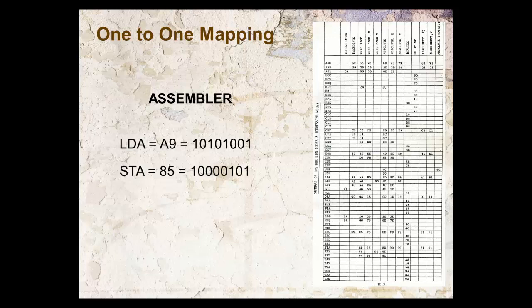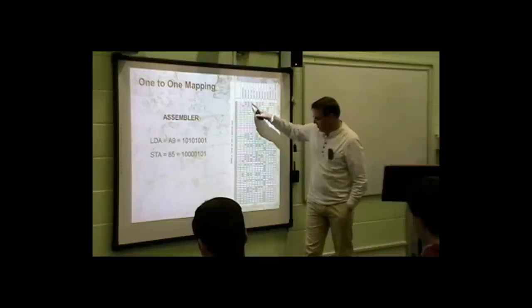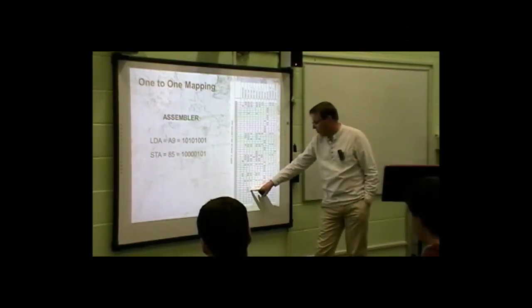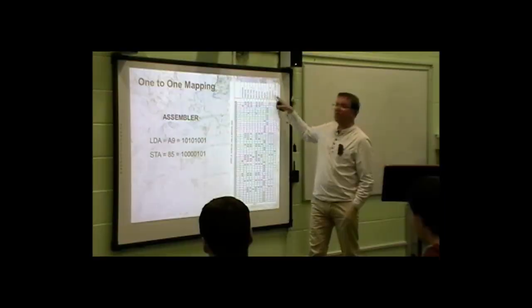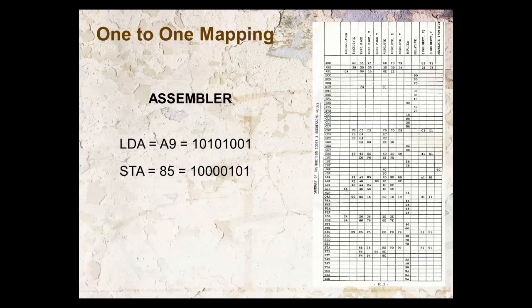STA — store the accumulator in memory — in the 6502 has the value 85. It will always be 85 in the 6502. If you ever look at these sheets you'll see STA with values 85, 95, 8D, 9D — that's because of the condition in which you wish to use the command. But when I have chosen one command on here, it will always be that number. One command becomes one code. Always.